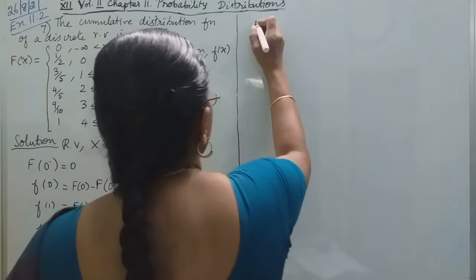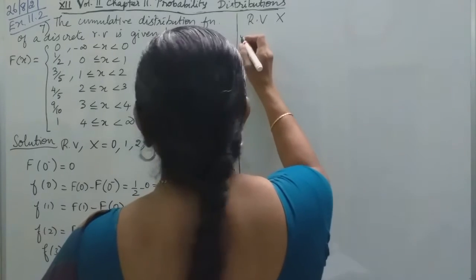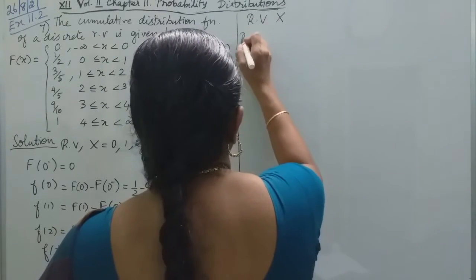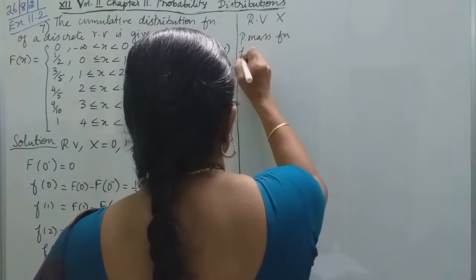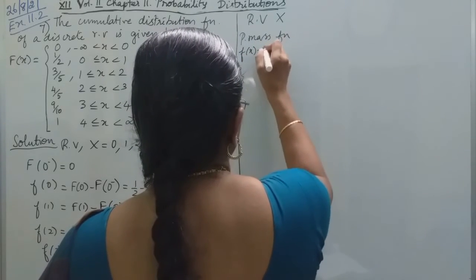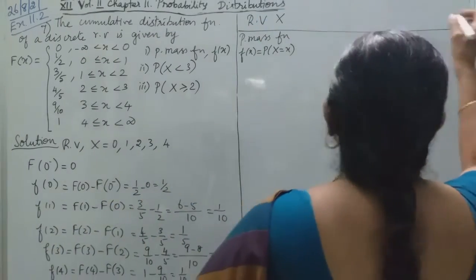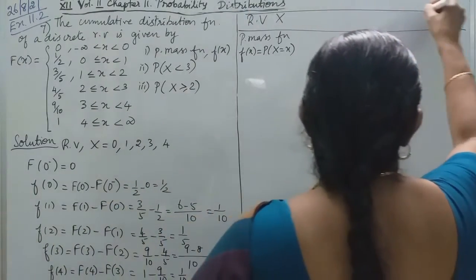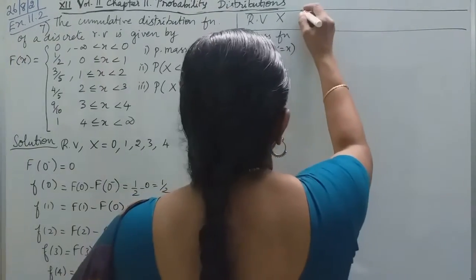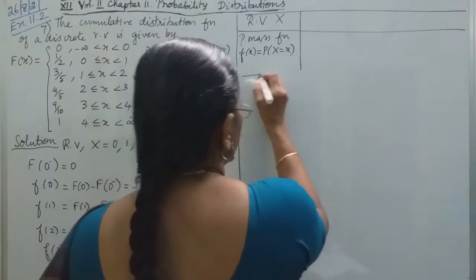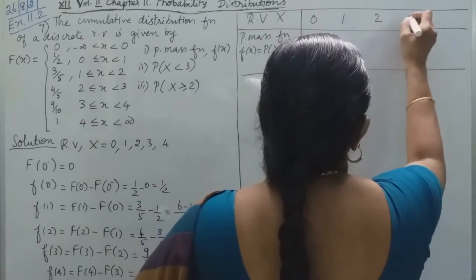So first, X, that is random variable capital X, we need the probability mass function. So that is small f(x), the probability of X equals x. Capital X takes the values 0, 1, 2, 3, 4.